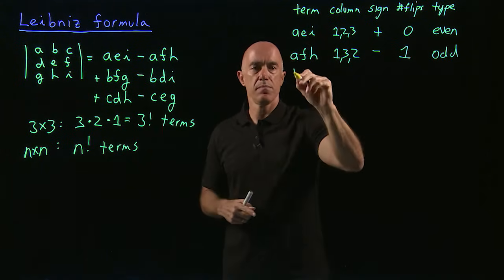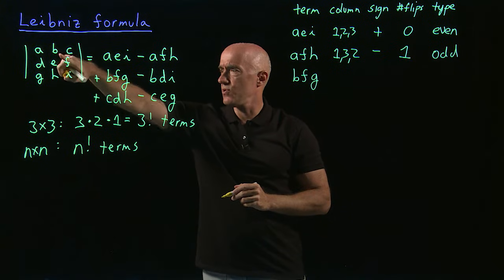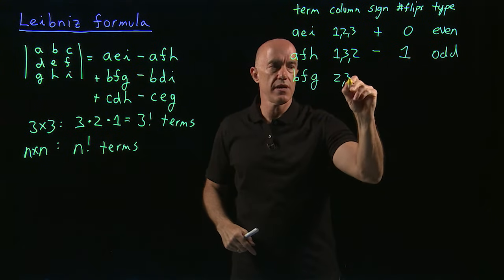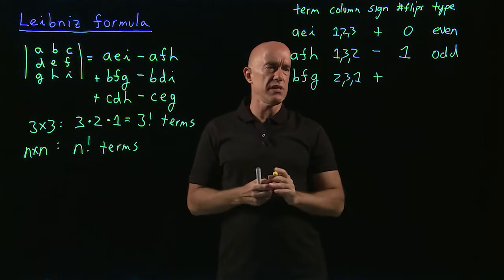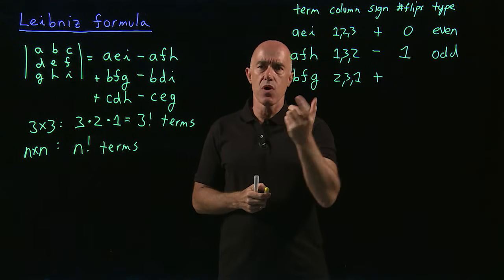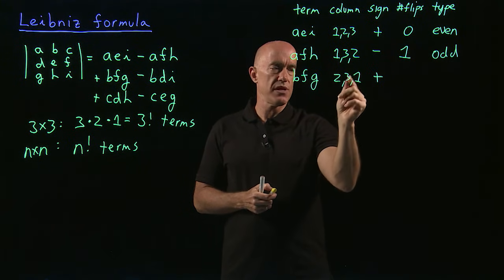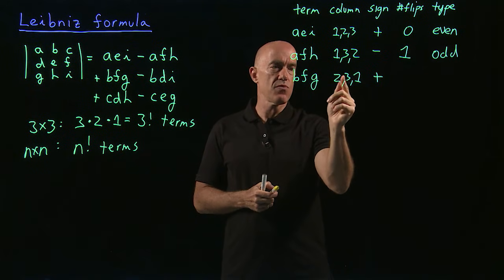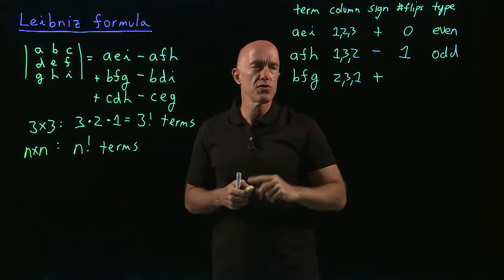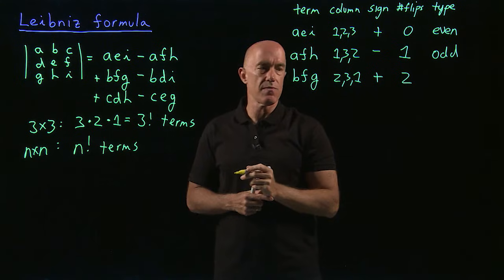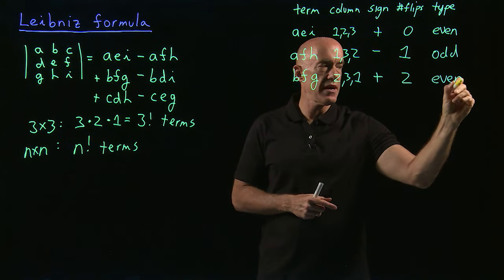Next, B, F, G. The column order is 2, 3, 1. The sign is plus. How many permutations do we need to go from 2, 3, 1 to 1, 2, 3? We swap one and two to get 1, 3, 2, and then swap three and two to get 1, 2, 3. So we need two permutations. Two is an even number, so that's even.